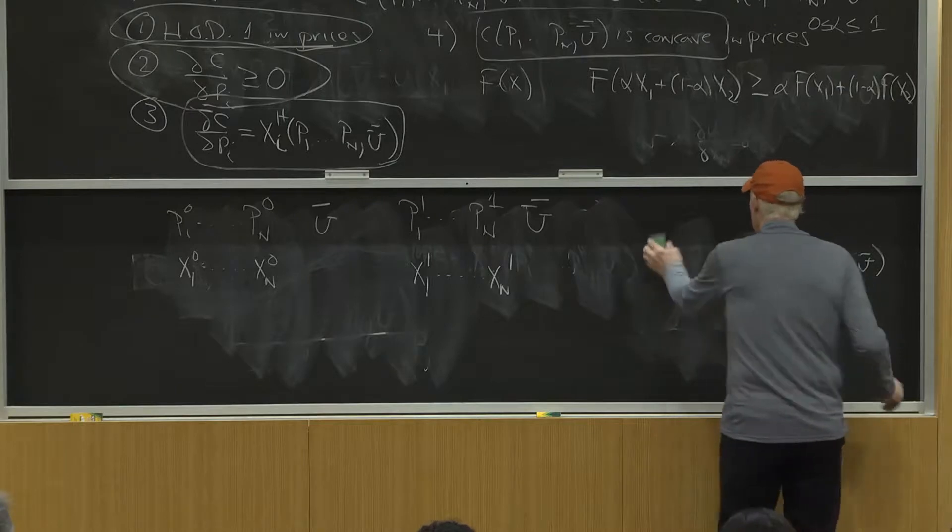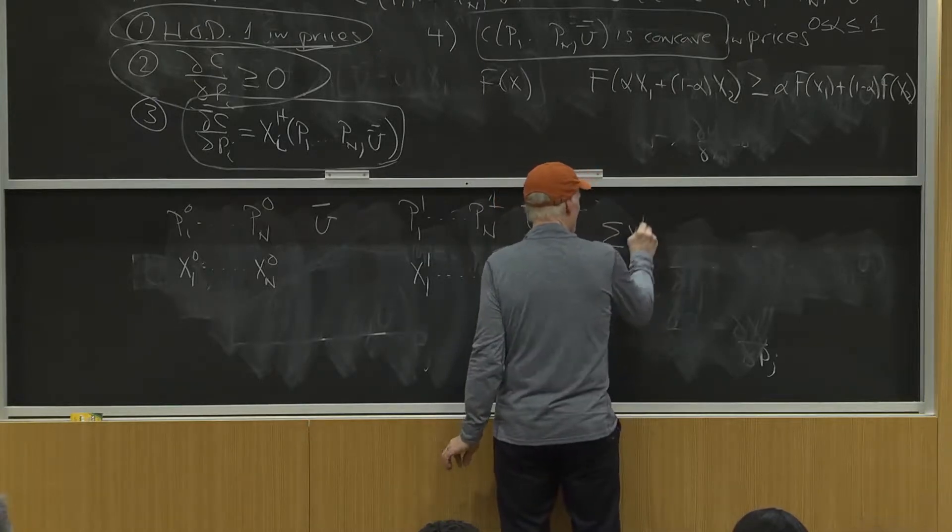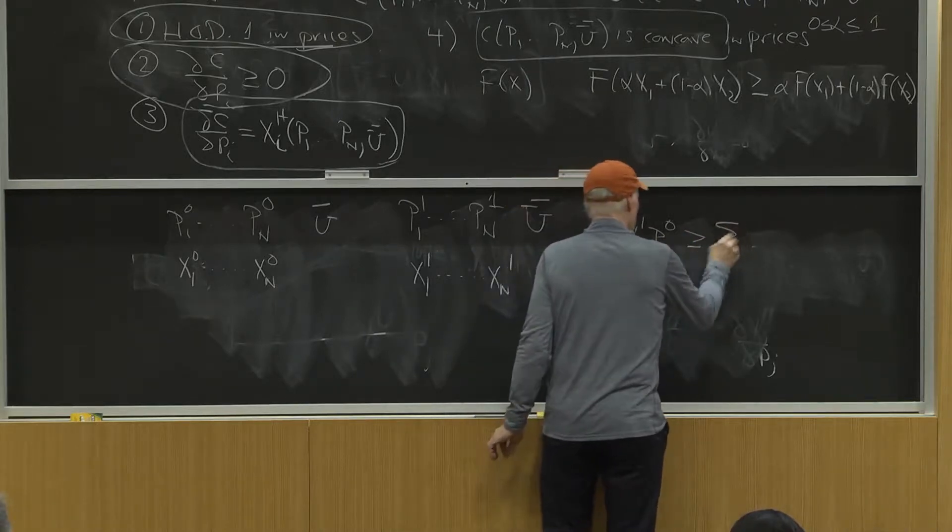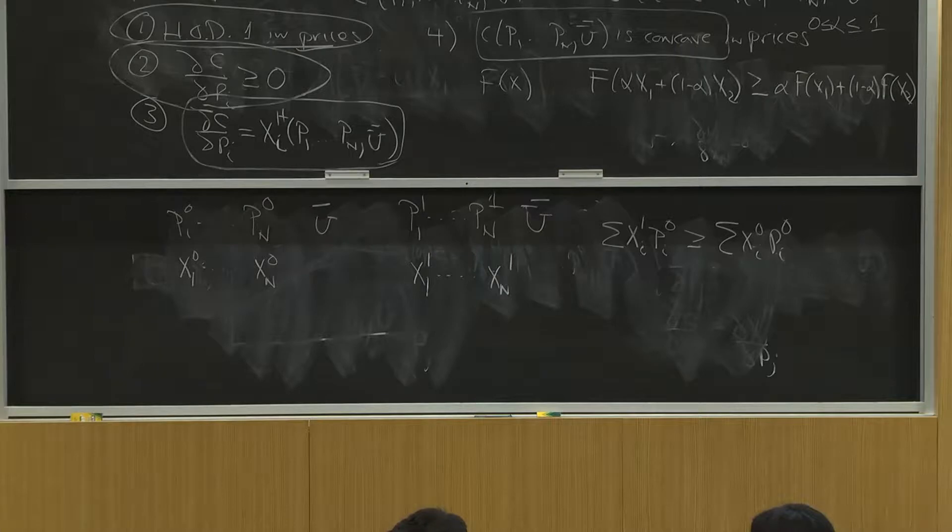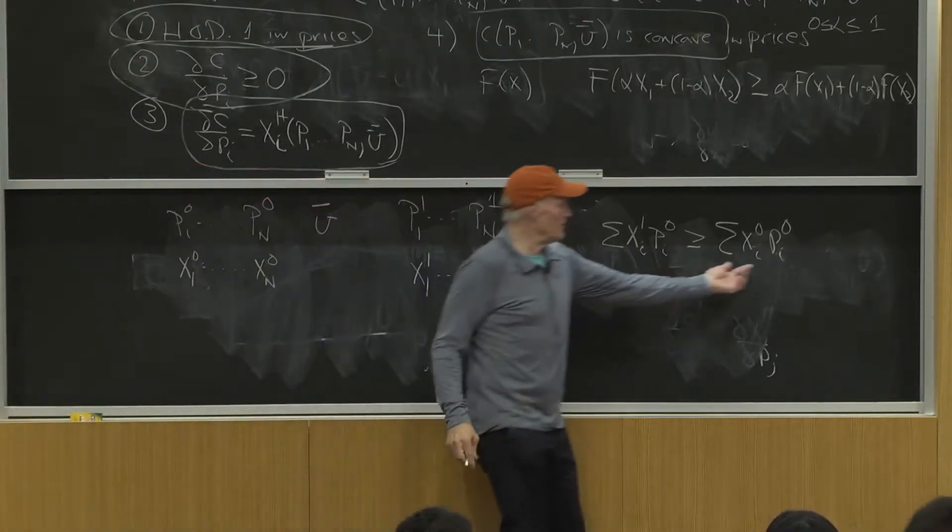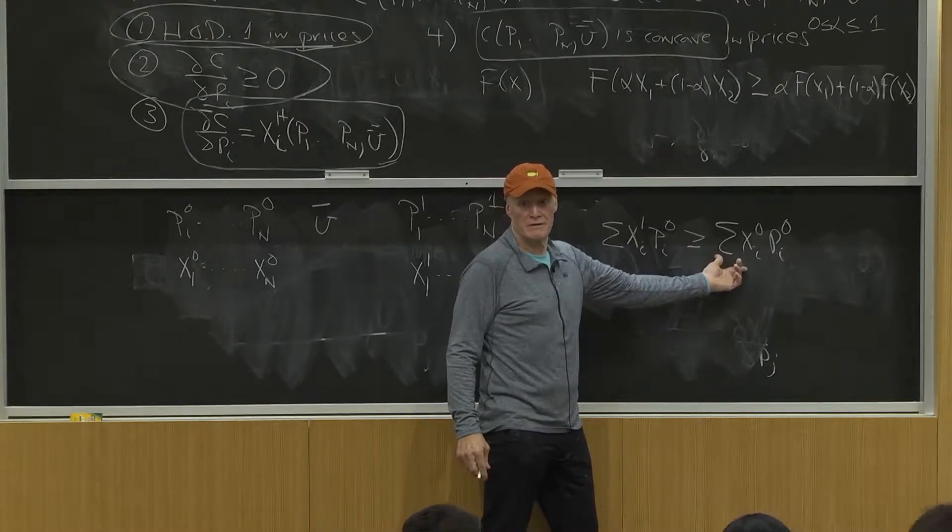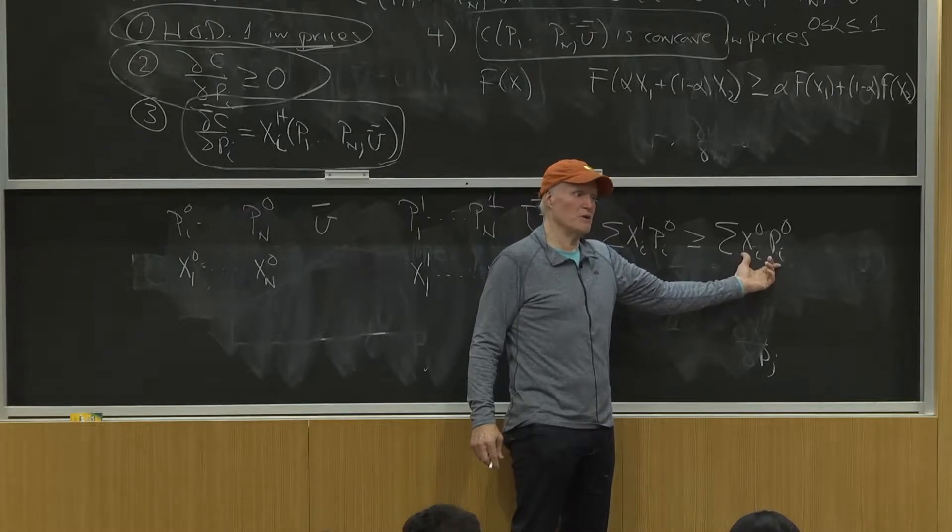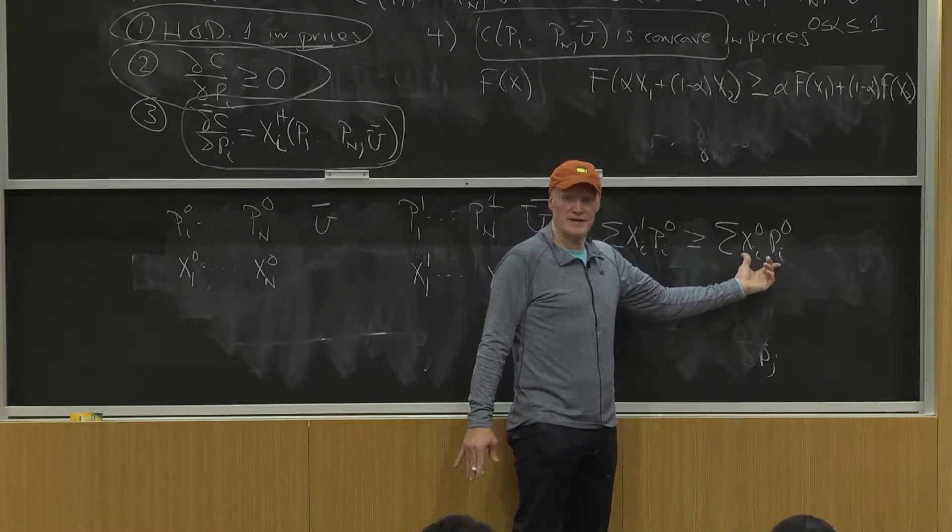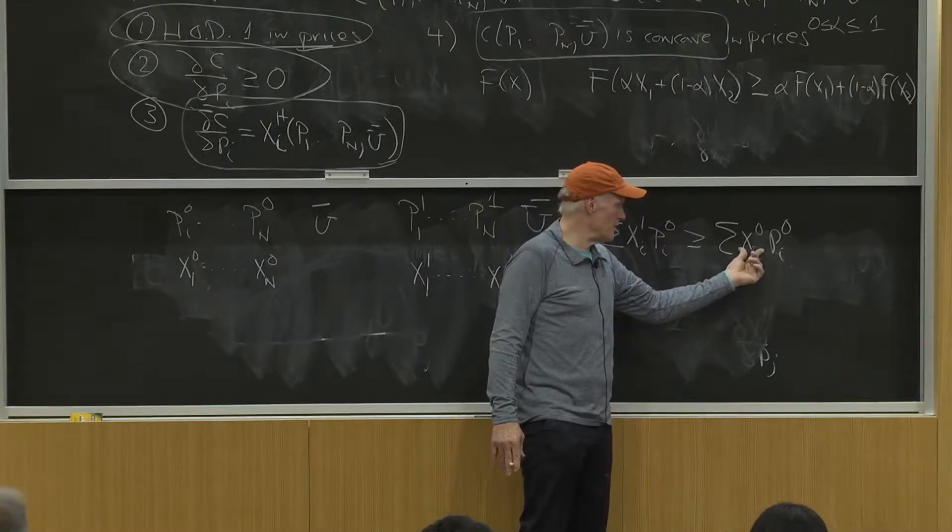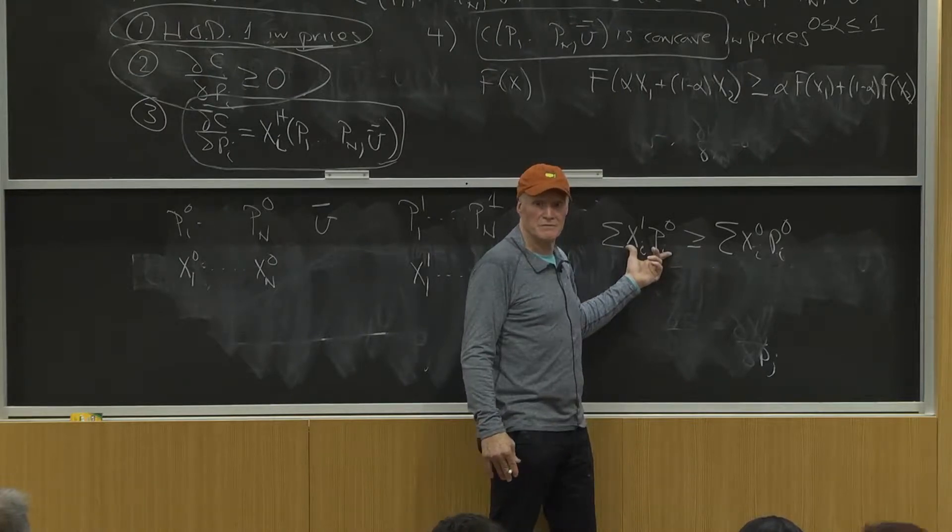Now the fact that these bundles are cost minimizing is going to tell me that the sum of xi^1 pi^0 is bigger than or equal to the sum of xi^0 pi^0. This is the cost minimizing bundle at these prices, so at these prices this bundle has to cost at least as much. Otherwise this one couldn't be cost minimizing. If this one costs less, then that would contradict this being the cost minimizing bundle.